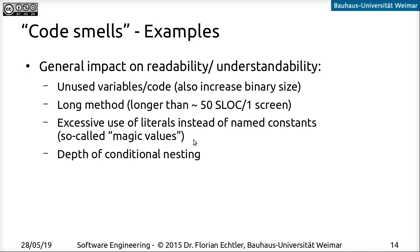If you have so-called magic values in your code — lots of plain numbers that have some sort of meaning, for example for some kind of network protocol or port numbers — the more of these plain numbers you have without explanation, the harder it will be to understand what's going on. So for this, you should use named constants or static variables to hold these and give each individual number a meaningful name.